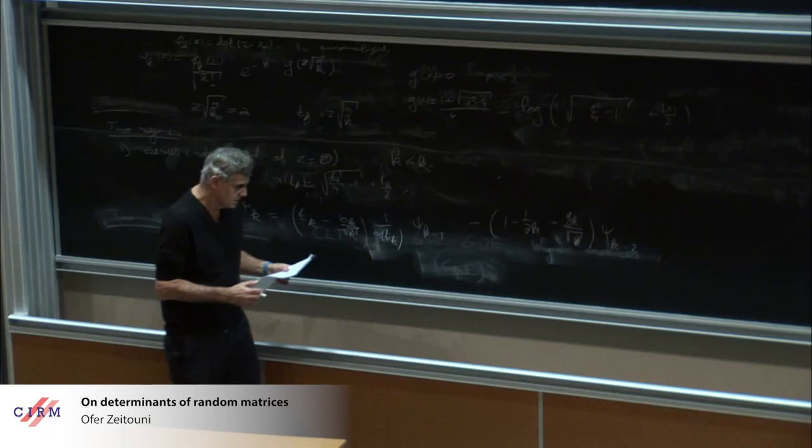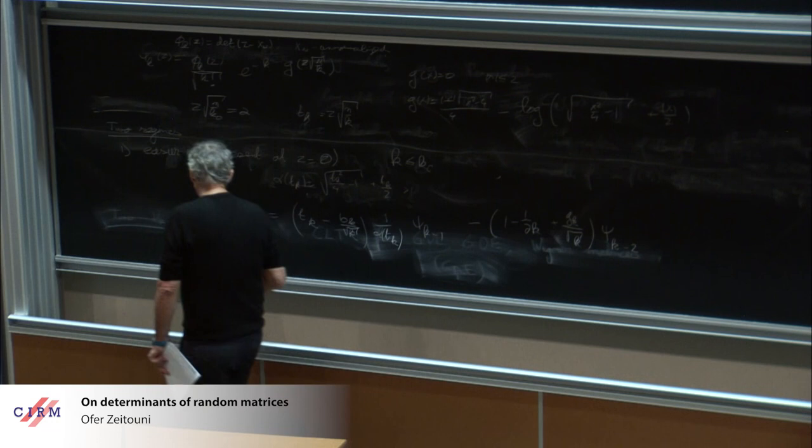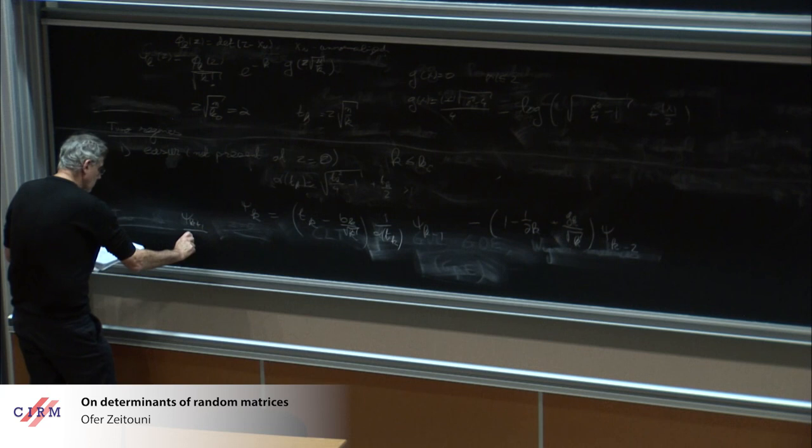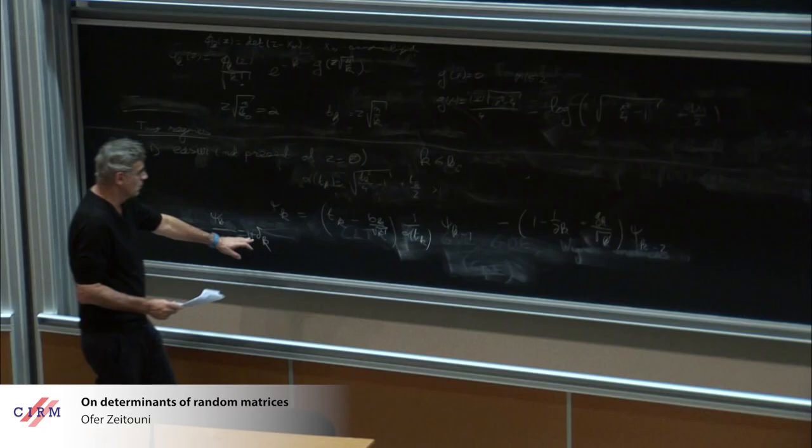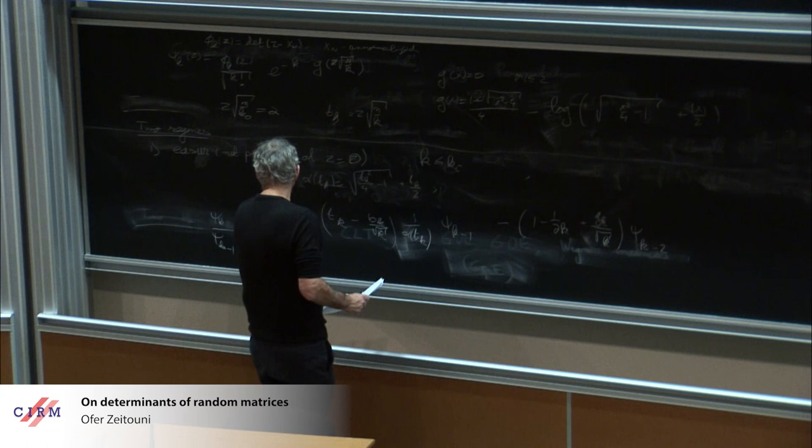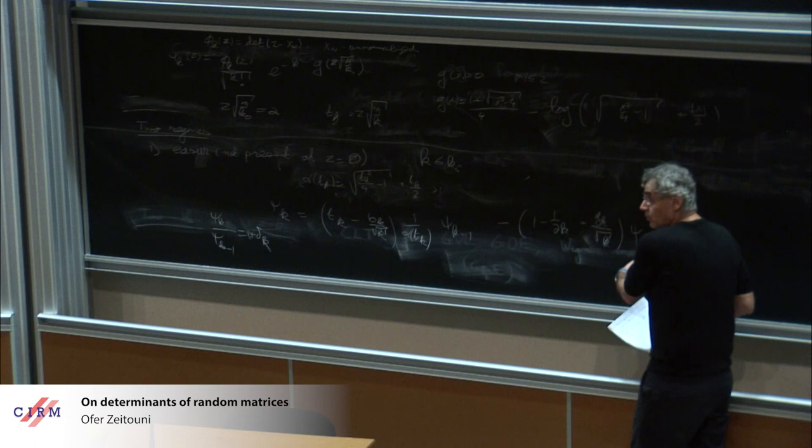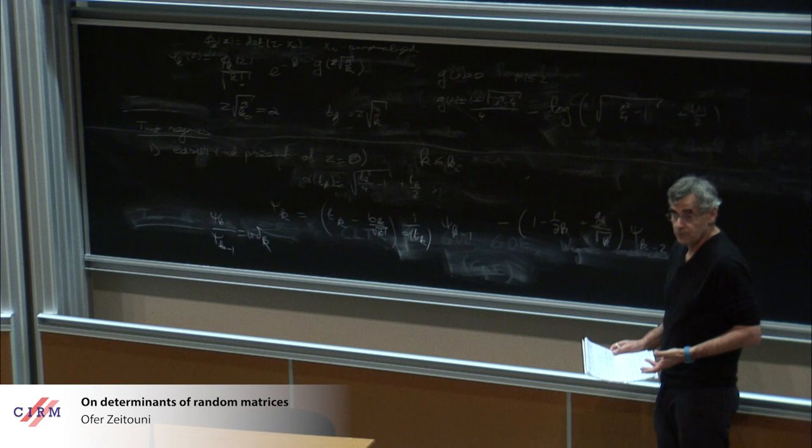With the scaling I wrote, the recursion becomes psi_k is t_k minus b_k over square root k times 1 over alpha of t_k times psi_{k-1}, minus 1 minus 1 over 2k plus g_k over square root k psi_{k-2}. I wrote my chi-square variables as a constant plus a Gaussian, but I didn't do anything else. The important thing to note is in leading order, we can introduce psi_k over psi_{k-1} and call this 1 plus delta_k.